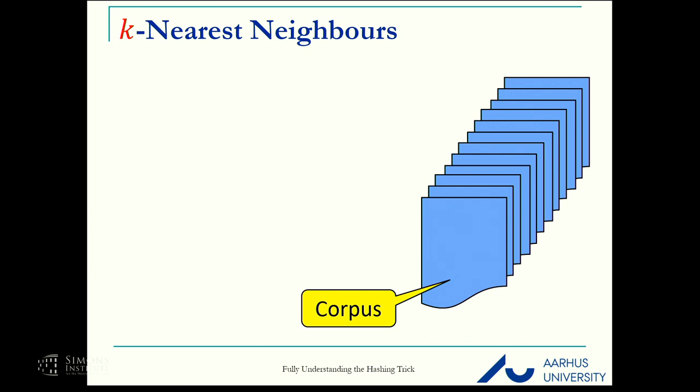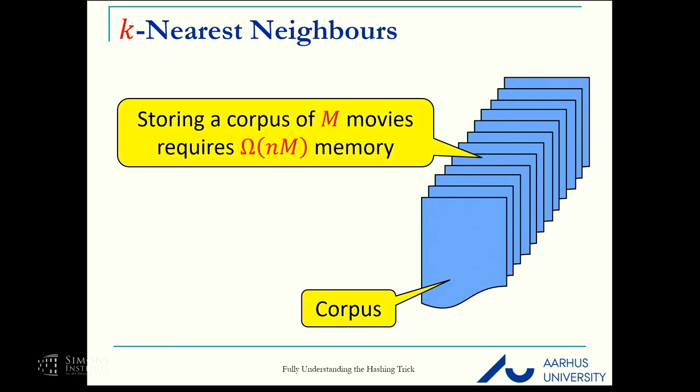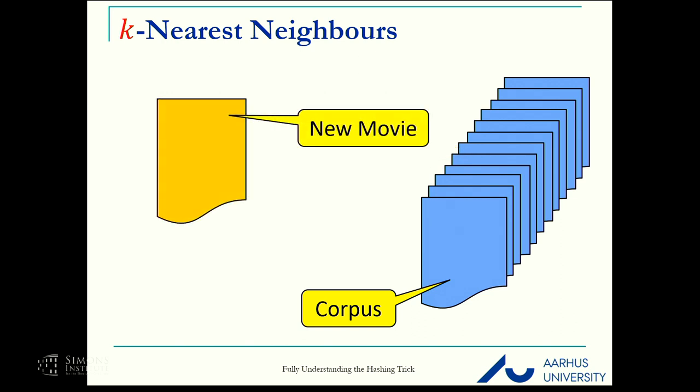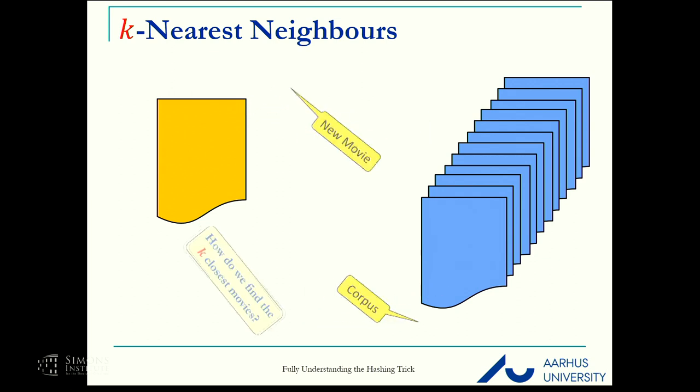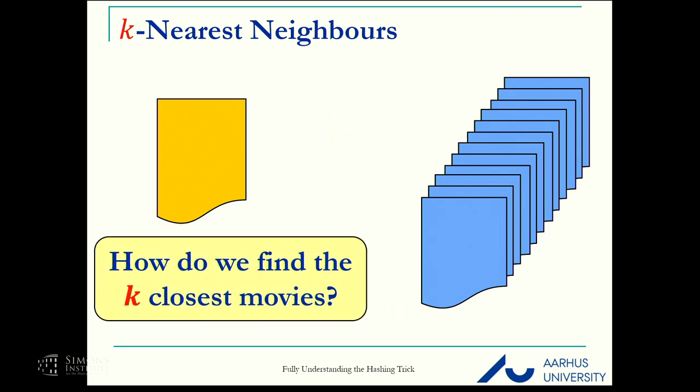We take all these characteristics and map them to 0-1 vectors, to bit vectors, which are called feature vectors. For the rest of the talk, denote the feature dimension by n. We have the entire collection of movies that the Netflix server has. This is called a corpus. Storing the entire corpus takes omega of nm memory.